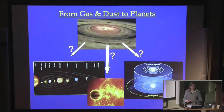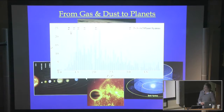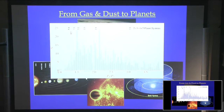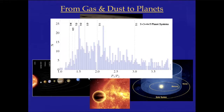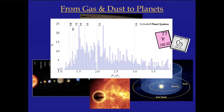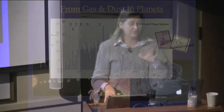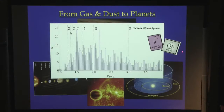The first constraint I'll be talking about today is related to the architecture — the period distribution, or period ratio distribution from Kepler — and I will explain this more in a second. In the last part, I will be talking about something more related to the formation of terrestrial planets in our own solar system and their connection to the Kepler planets, and how we have some evidence from highly siderophile elements, for example, iridium and osmium.